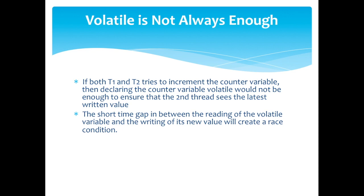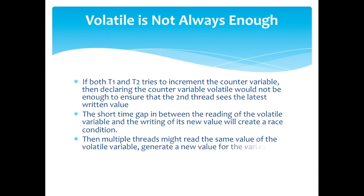This is because the short time gap in between the reading of the volatile variable and the writing of its new value will create a race condition. Then multiple threads might read the same value of the volatile variable, generate a new value for the variable, and when write the value back to main memory, will overwrite each other's values.